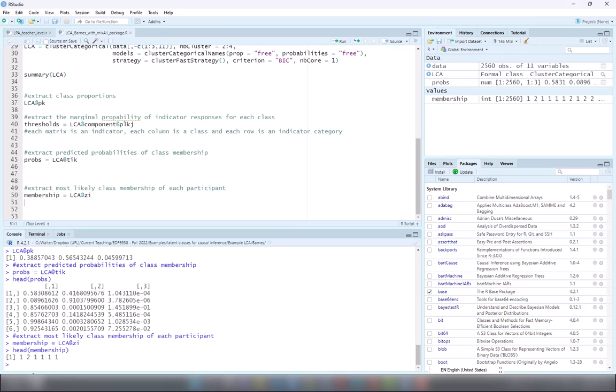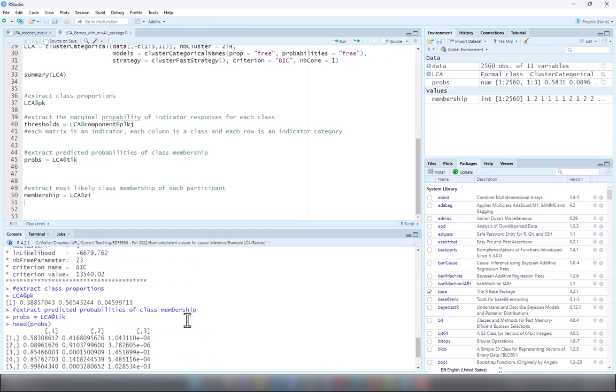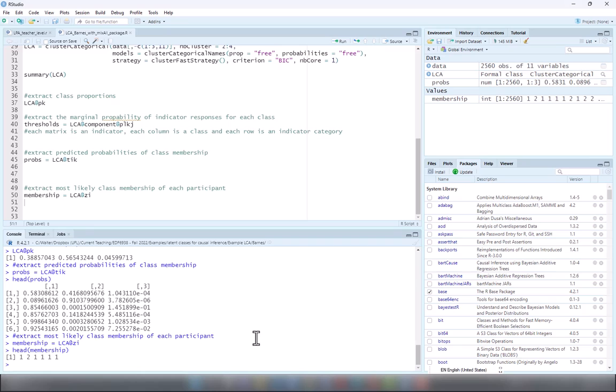I can also get the most likely class membership. You can see just a vector, so it tells you which class each school is most likely to belong to. Those are the classes that I can extract and I will interpret these based on the conditional response probabilities.